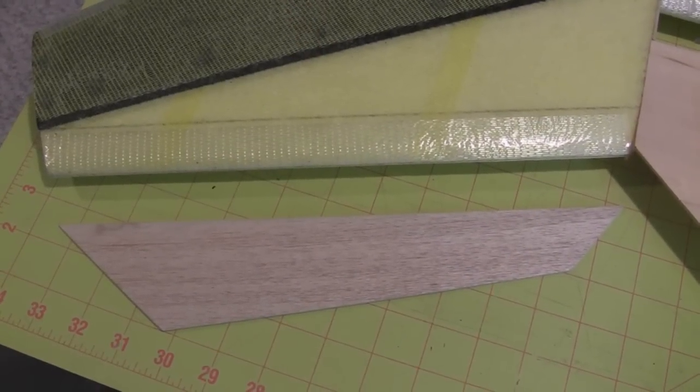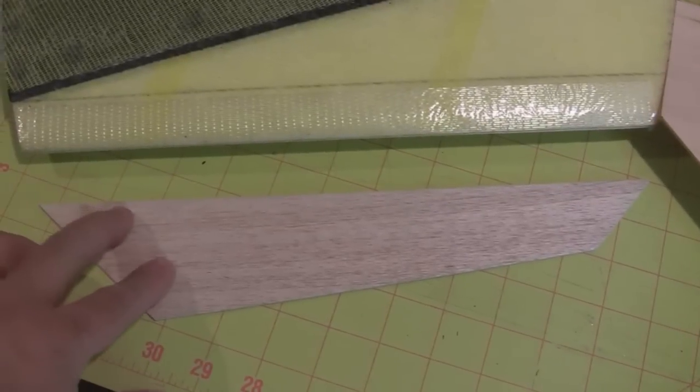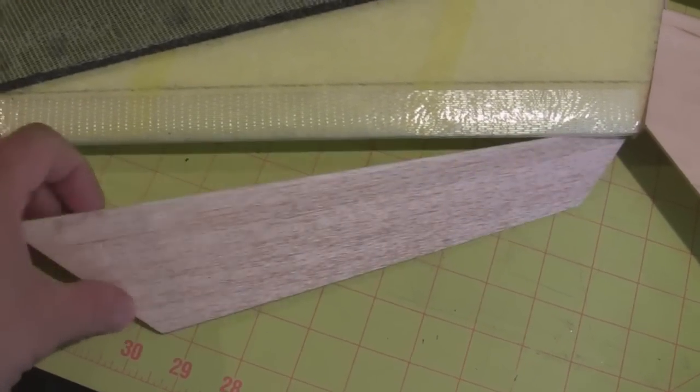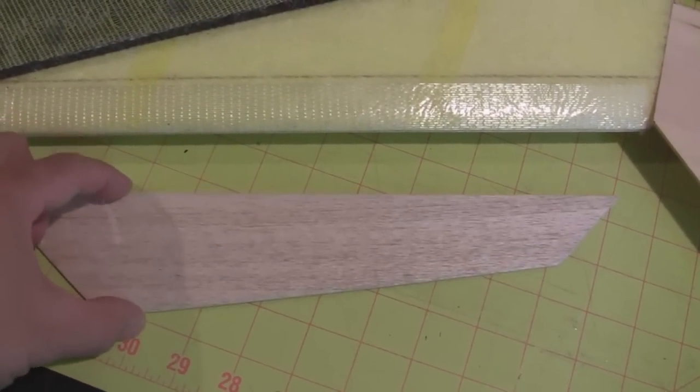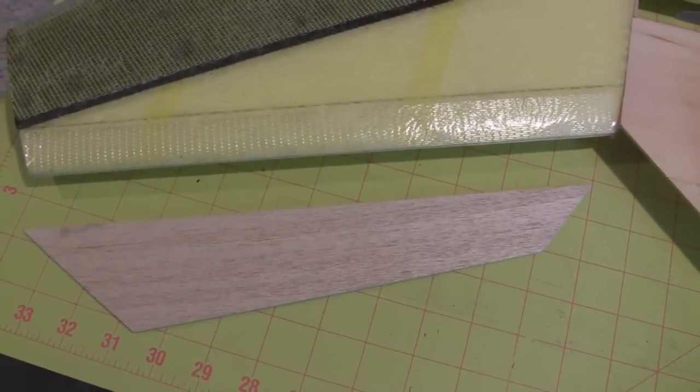Next we're going to be adding on the elevrons. I've already got mine cut out. They're made out of 1/8 inch thick balsa wood. Let's go ahead and show you how to lay out the dimensions and cut these out.